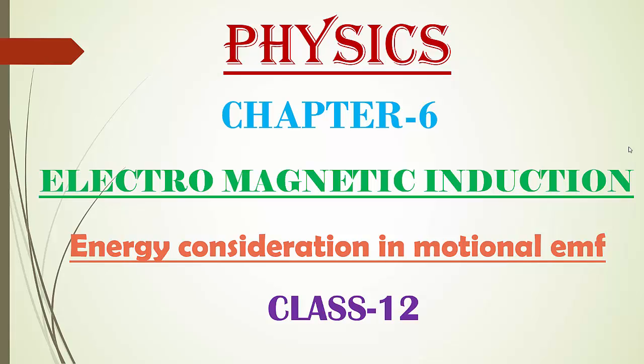Hello everyone, welcome to physics online classes for class 12 students. Let us continue chapter 6, electromagnetic induction. Today we are going to learn about energy consideration in motional EMF. In the previous class we derived an expression for motional EMF — the EMF induced in a conductor moving in a uniform magnetic field — and the expression is given by e = Blv, where e is induced EMF, B is magnetic field, l is length of the conductor, and v is its velocity.